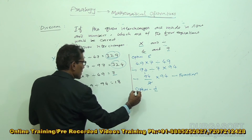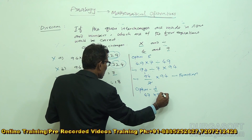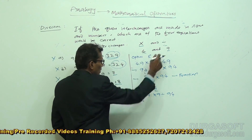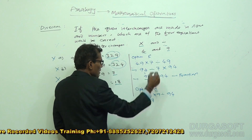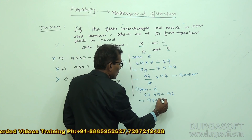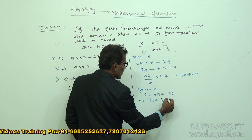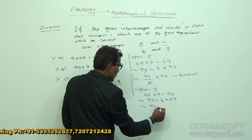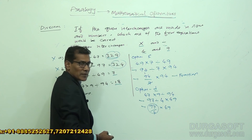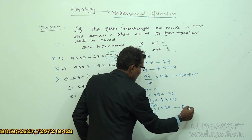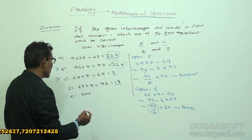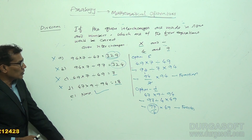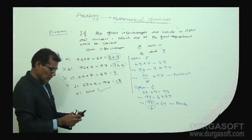Now we cross-check option D. The expression is 47 × 9 ÷ 94, result should be 18. After changes: 4 replaced by 9 giving 97; 7 stays; multiplication changed to division; 9 replaced by 4; division changed to multiplication; in 94, 9 and 4 are interchanged giving 49. We get 97 ÷ 4 × 49. Since 97 is not exactly divisible by 4, we get a fraction. But the required result is 18, an integer. So option D is also wrong. Therefore, 'None' is the correct answer for this question.